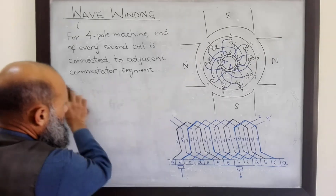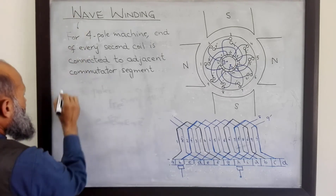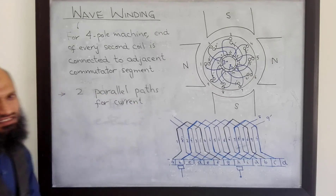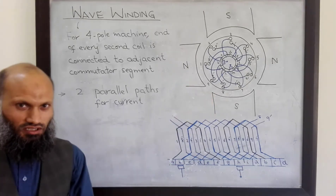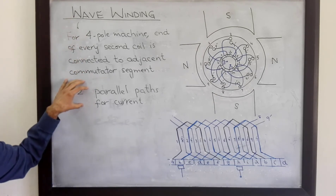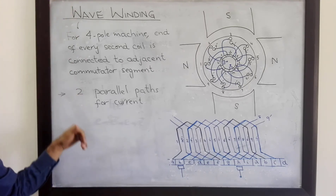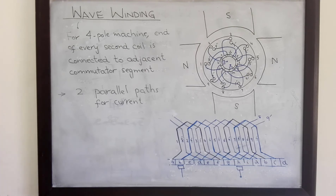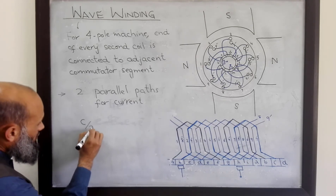This wave winding has certain additional properties compared to lap winding. For wave winding, there are always two parallel paths for current. These machines can handle small currents — there are fewer parallel paths for current, so less current can be handled. C is the total number of coils in the machine, and P is the number of poles. There are always two parallel paths, so C divided by two will be the number of coils in each parallel path.